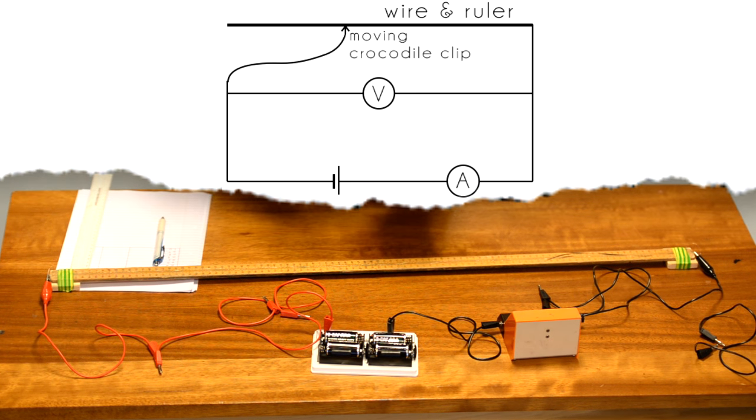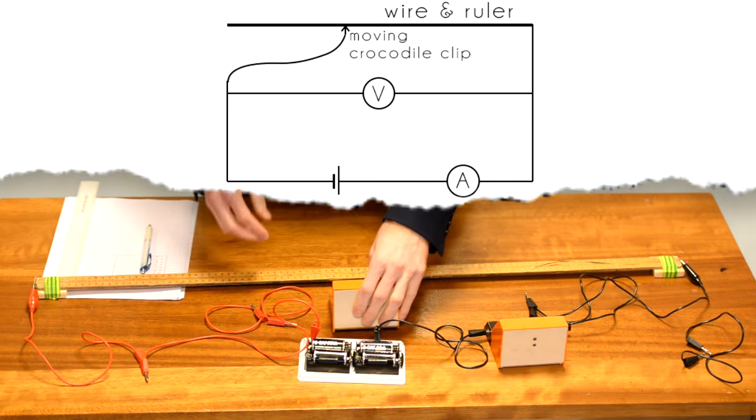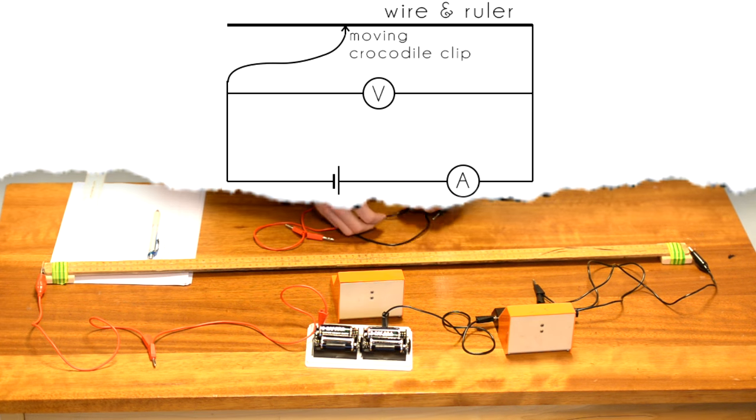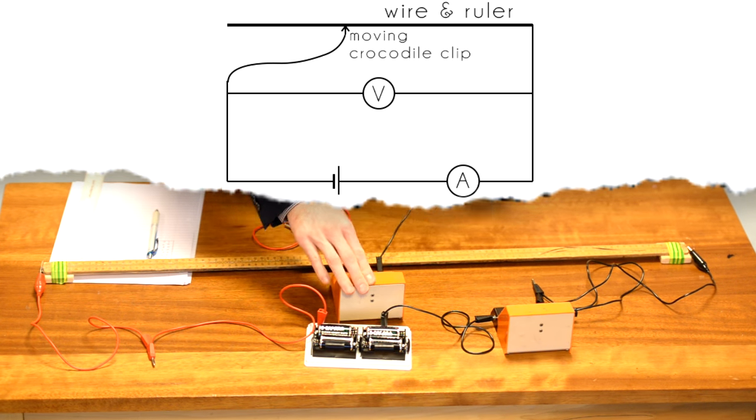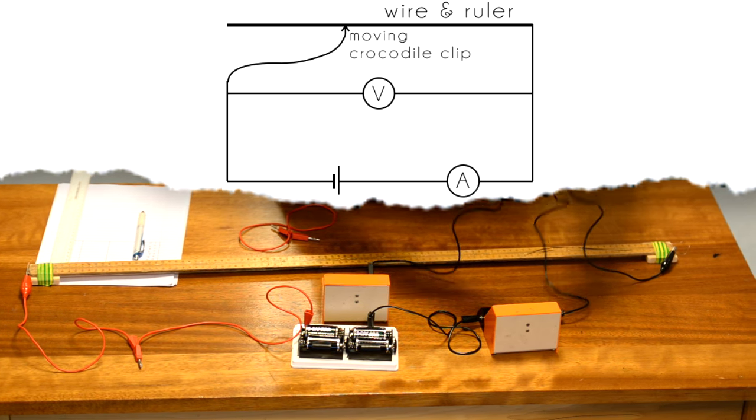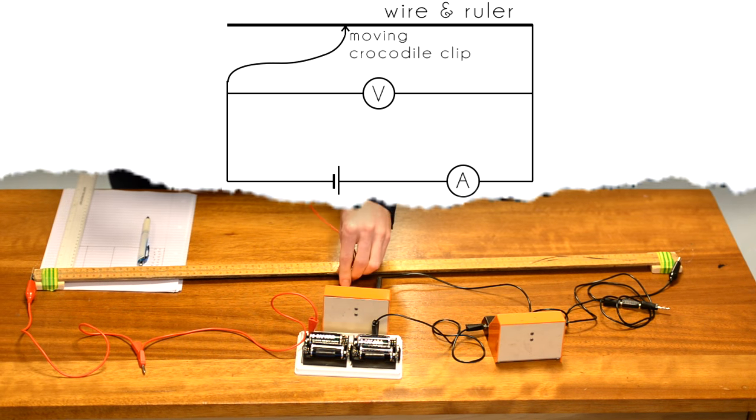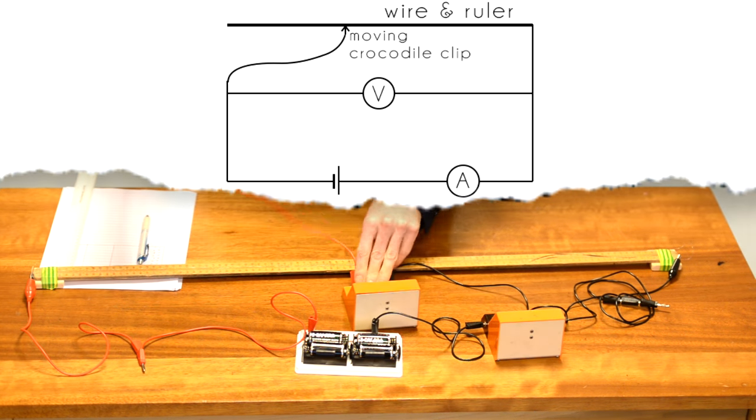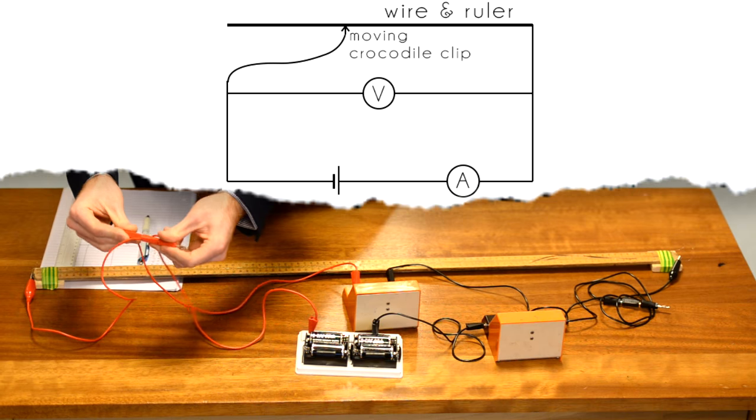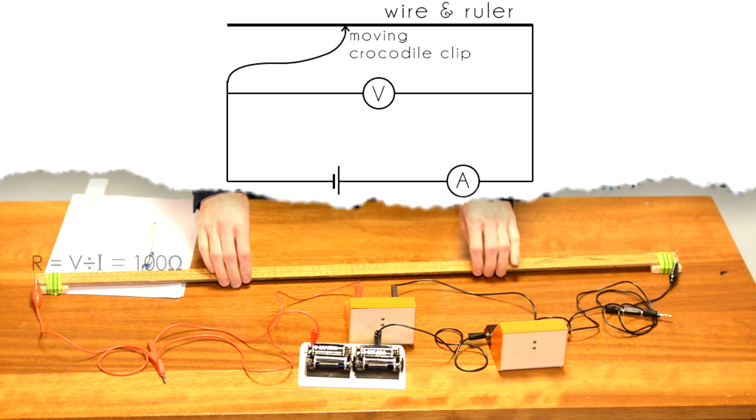Last thing to do then so that I can get my measurements of potential difference is to connect the voltmeter up. Two wires into one terminal of the voltmeter and then I'm just going to connect that into this junction here, and with the last wire connect the other terminal of the voltmeter up to this junction. That completes the circuit for this experiment.